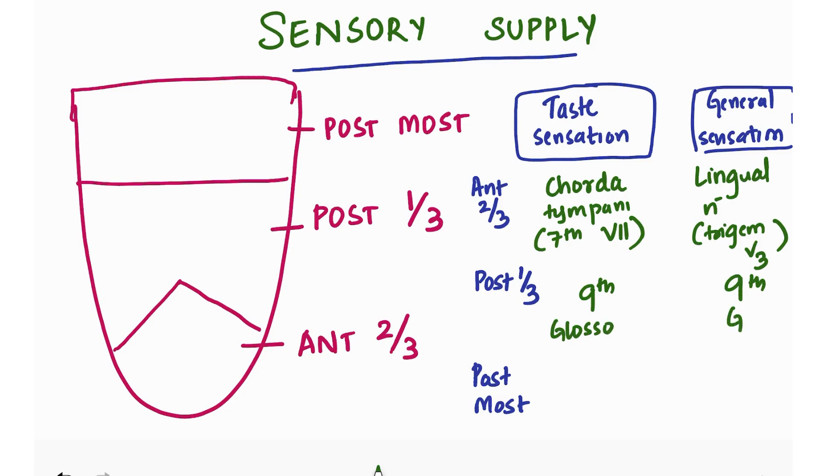For posterior one-third, both taste and general sensation is by ninth nerve, the glossopharyngeal nerve. Posterior most is by the tenth nerve, also called vagus, for both taste and general.